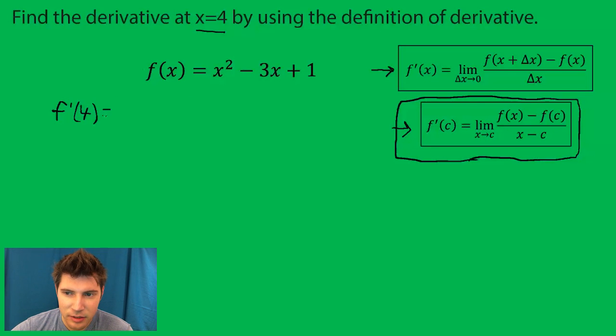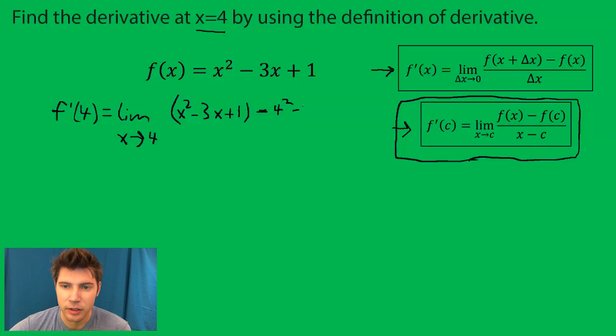The limit as x approaches four of, and then f of x, we just want to literally plug this in. Put parentheses around it to keep it neat. And then minus because of the minus sign here. And then f of c, which really is f of four. Which means we want to plug in four for x. So this is going to be four squared minus three times four plus one. And all of this is over x minus four.